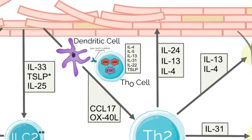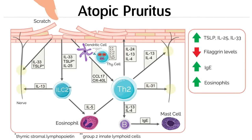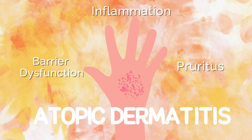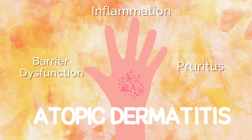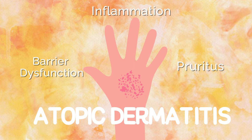In summary, the disrupted skin barrier and decreased levels of filagrin create a cycle of inflammation, pruritus, and increased skin barrier disruption fueled by inflammatory cytokines.